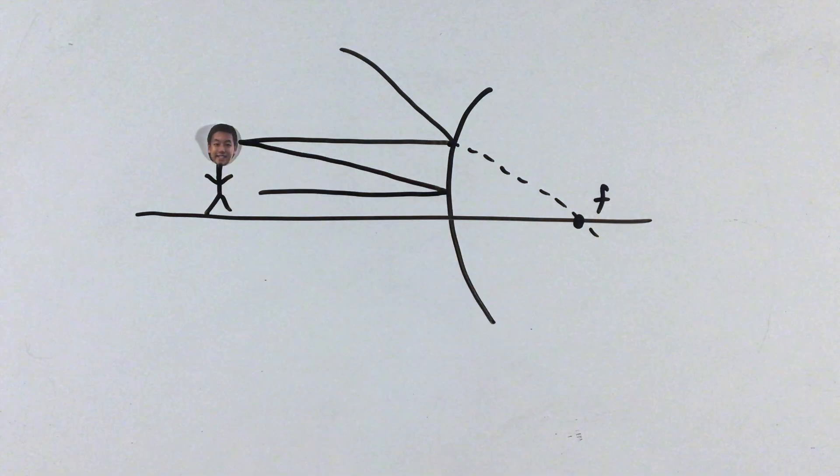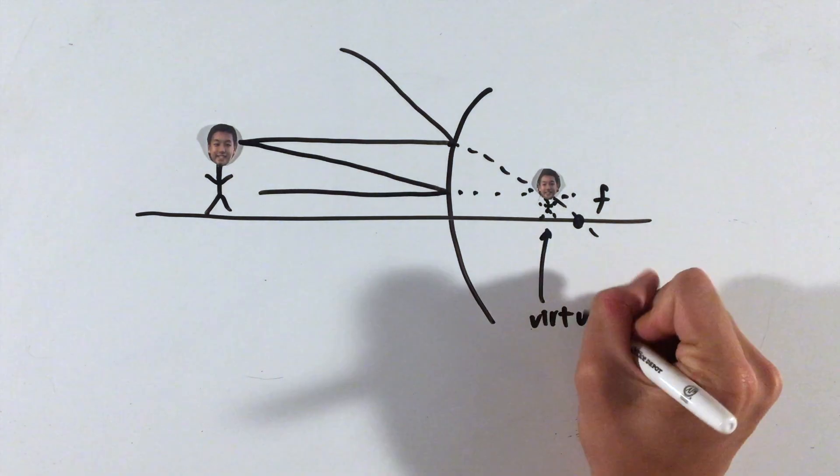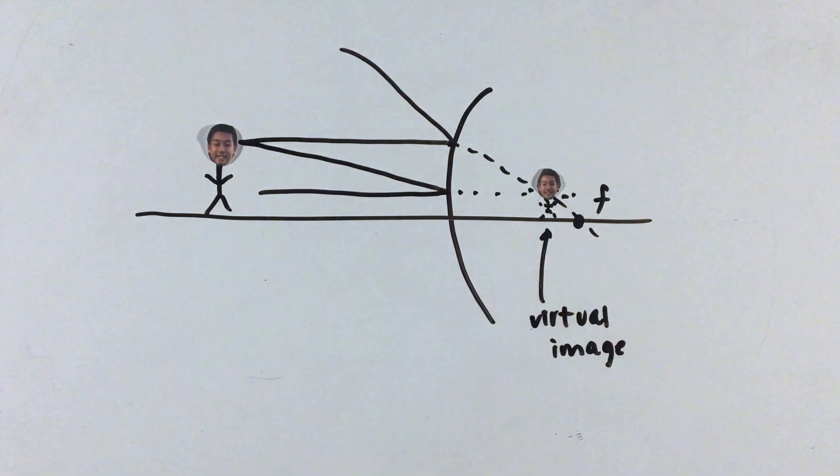This is what's known as a virtual image. To reconcile this problem, simply extend these rays backwards the other way, which I like to do with dotted lines to remind me of its virtual nature, and the intersection of these virtual rays is where the image will be produced.